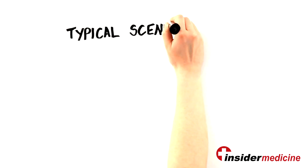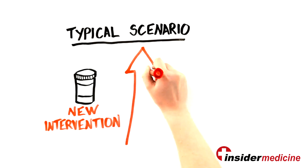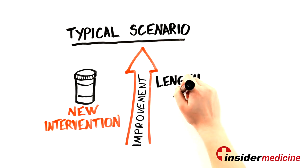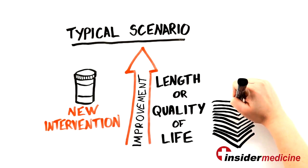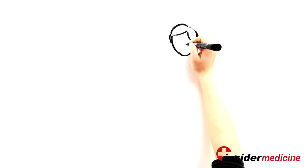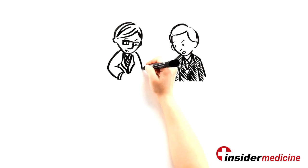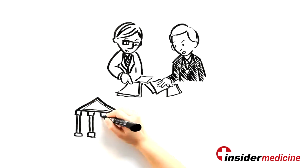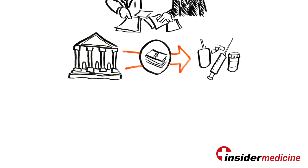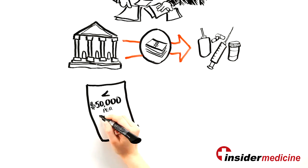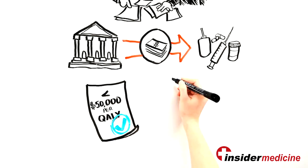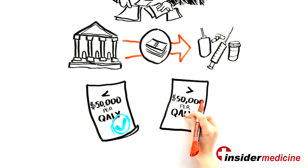The typical scenario is that a new intervention provides an improvement in either the length or quality of life but costs money. Then health economists and doctors argue it out as to whether the government should pay for the intervention. Most governments fund things that cost less than $50,000 per QALY and do not pay for others that are more costly.